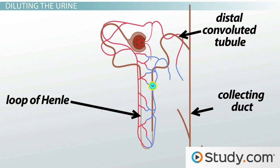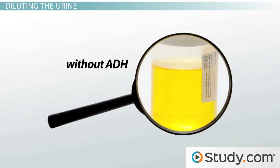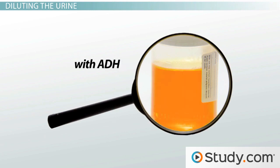If ADH is not released, then the filtrate passing out of the loop of Henle will remain dilute. The distal convoluted tubule and collecting duct will remain impermeable to water, and therefore excess water will be excreted out of the body in the urine. Therefore, the absence of ADH is what allows for dilute urine to be formed, while its presence allows for the creation of highly concentrated urine.